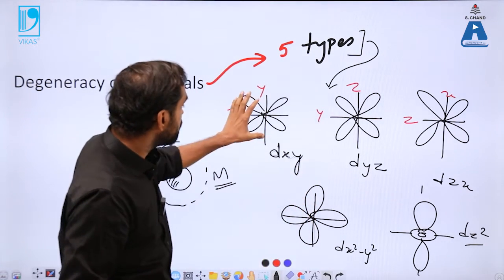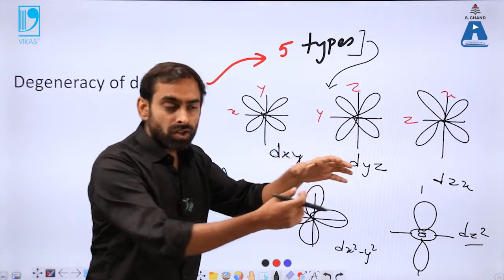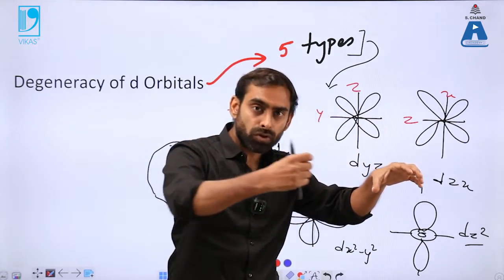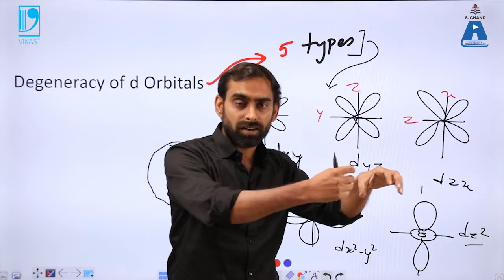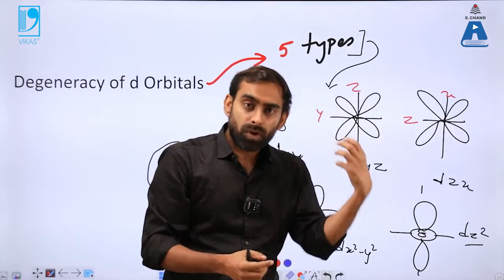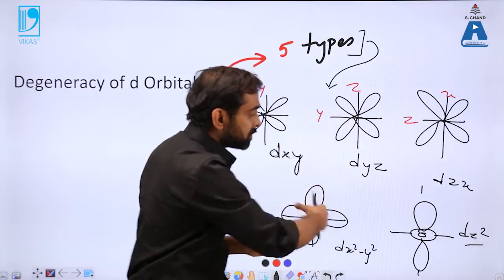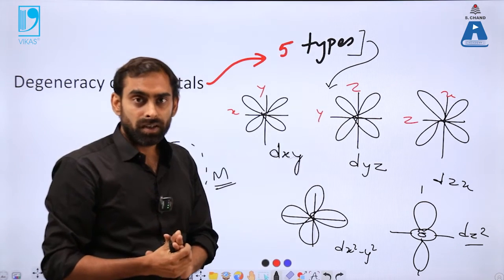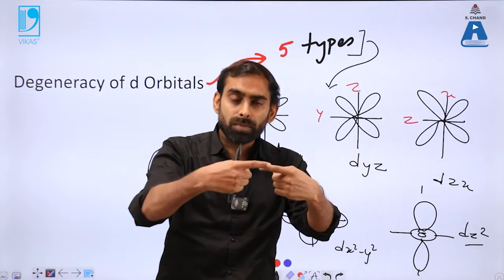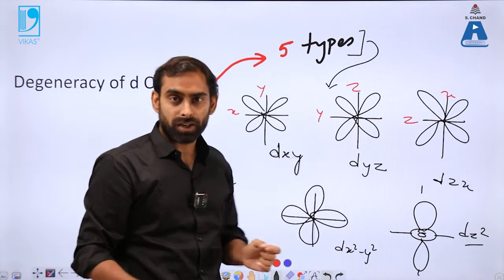And now you can imagine that these are degenerate orbitals, but they are present all together. So when a ligand will approach a metal ion which will have electrons in the d orbital, then what would happen?